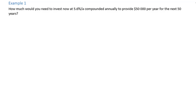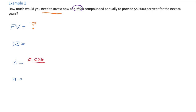Let's check out some scenarios. This first one's kind of unrealistic, but imagine you won the lottery or your great uncle you never knew left you a fortune. You've got all this money but you don't want it to all be gone — so how much do you need to put in the bank right now? The bank's giving you 5.6% interest, so that's 0.056, compounded annually — once a year — so we divide by 1, which is just 0.056. To provide $50,000 per year for the next 50 years: that's 50 years times once a year, so N = 50.